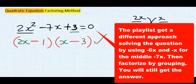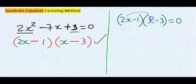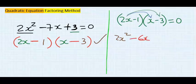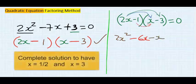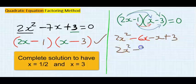This becomes our factored form. If you expand the brackets you get back the original question: two x² times one gives two x², and the cross terms give minus six x and minus x, combining to minus seven x, plus three — which is exactly our original equation.